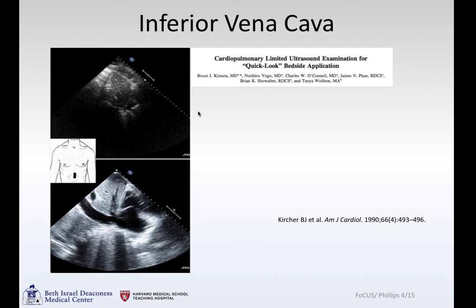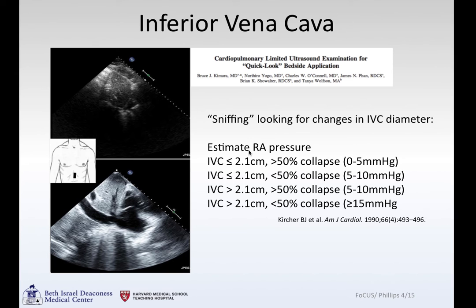A quick word about the IVC: you can estimate right atrial filling pressure based on what the IVC is doing. It's probably most sensitive for seeing a very collapsed IVC rather than a dilated one — there are a couple of reasons why you could have a dilated IVC, including being intubated. If it's totally flat and collapses with breathing, you probably have low filling pressure. If it's somewhere in the middle, you're in the 5–10 mmHg range. If it's dilated and not collapsing, you're in the greater than 15 mmHg range.